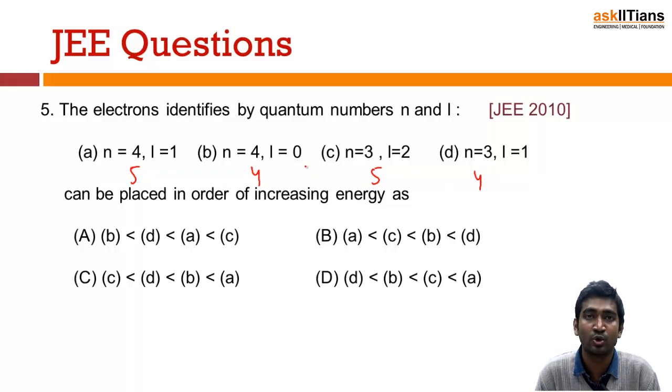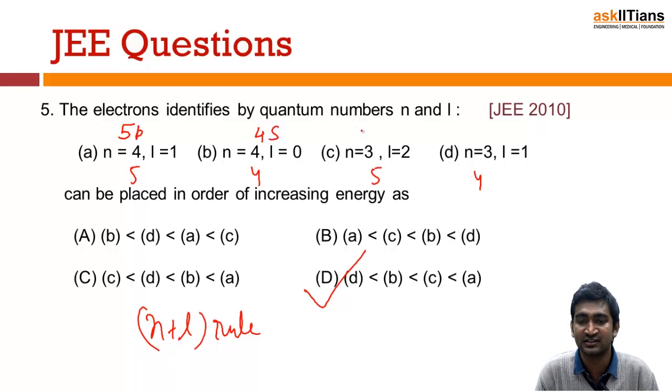First of all in increasing order, I will check for the lowest one which is 4. Out of those with 4, who will be the lowest? The lowest will be D because n is 3 here. In which option is D first? That is already here. This is the lowest. Then it's B because n+l is 4. Then out of these two, the n value is lowest at 3, so C will come and then A will come. So I hope now you understood what I mean by n+l rule and its application.